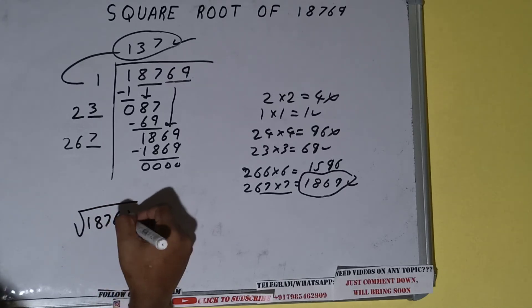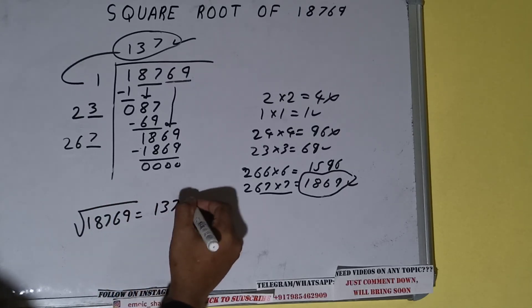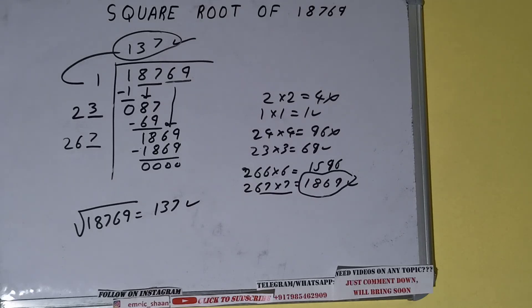So square root of 18769 will be 137. That's it. So if you found the video helpful, please do hit the like button, do consider subscribing, and thanks for watching.